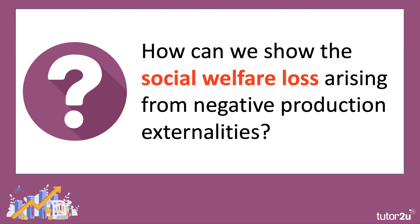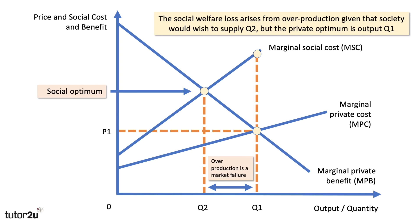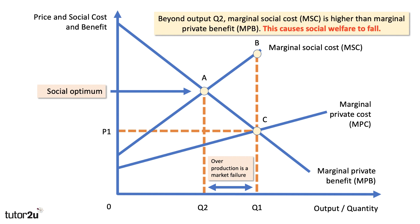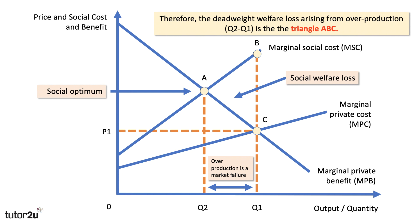How can we show the social welfare loss arising from production? Q1 is higher than Q2 — society would wish to supply Q2, but the private optimum is Q1. We think about welfare by marking points A, B, and C on the diagram. We'd prefer to be at A but end up at point C. Beyond output Q2, marginal social cost is greater than any benefit, causing social welfare to fall. Therefore, the deadweight loss of social welfare arising from overproduction is shown by triangle A, B, C. Overproduction and underpricing the externality leads to a loss of social welfare.